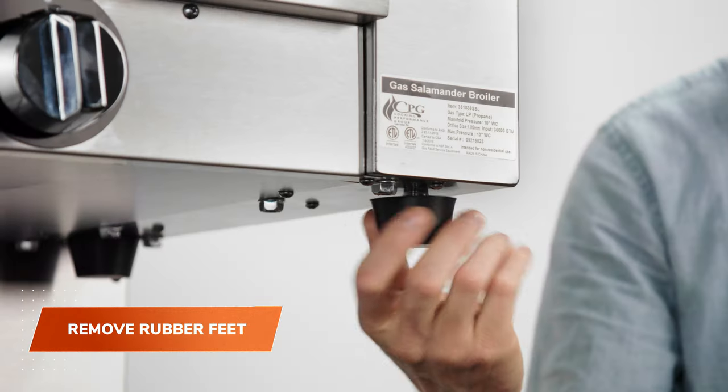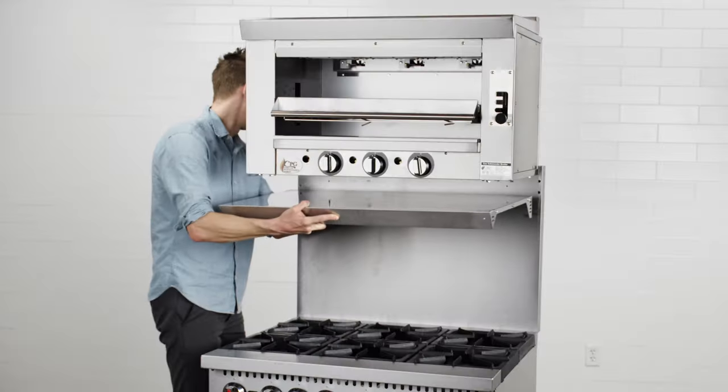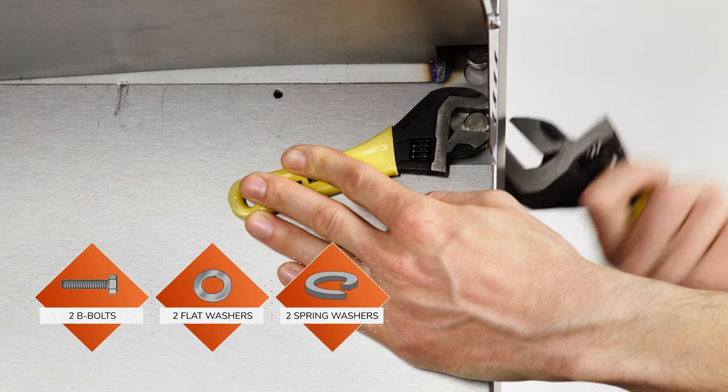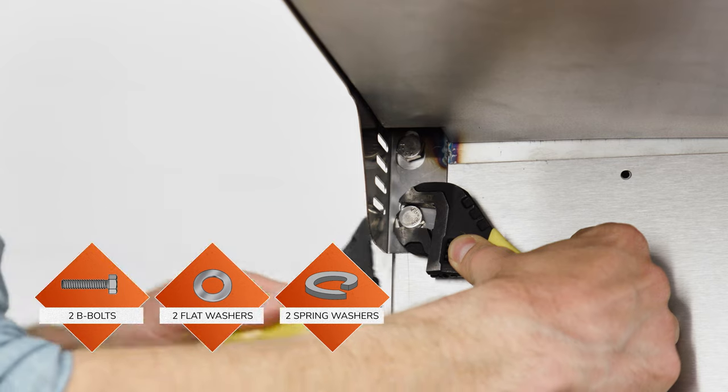Remove and discard the four rubber feet. Finally, attach the heat shelf to the backsplash using two B-bolts, two flat washers, and two spring washers.